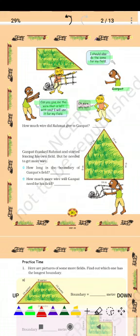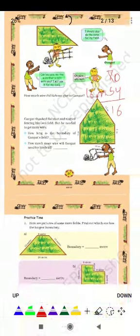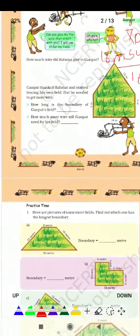तो जो रहमत है, वो 70 मीटर लेकर आया था और उसने 54 मीटर use कर लिया। जब हमने 70 में से 54 को minus किया तो 16 मीटर बचा। तो उसने गनपत को 16 मीटर दे दिया।